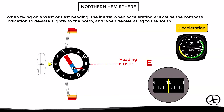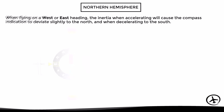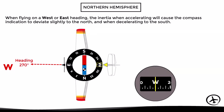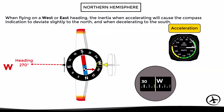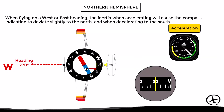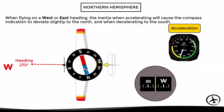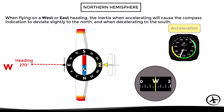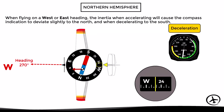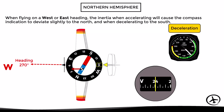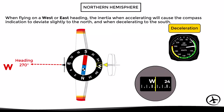This deceleration effect will happen as long as the aircraft continues to decelerate. Once deceleration finishes and the aircraft flies at constant speed again, the inertia will disappear and the compass will return to the correct heading indication. Exactly the same effect occurs when flying to the west with heading 270. If the aircraft accelerates, the compass will give a false turn indication to the north, and once acceleration stops and constant speed is maintained, the compass returns to the correct heading. If the aircraft decelerates, the compass will indicate a false turn to the south, and again once deceleration stops the compass returns to the correct heading.